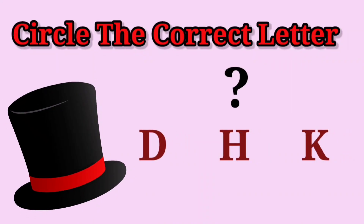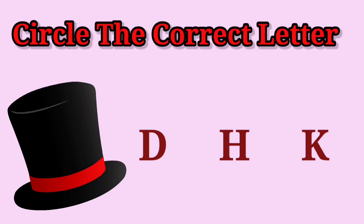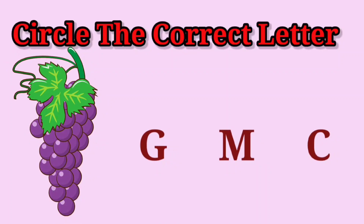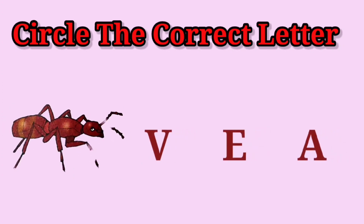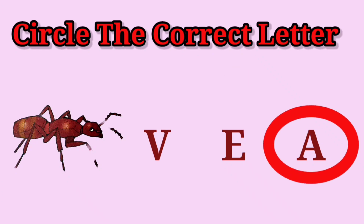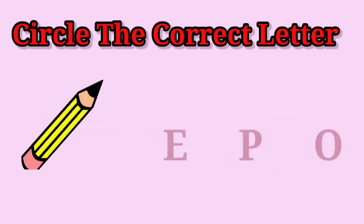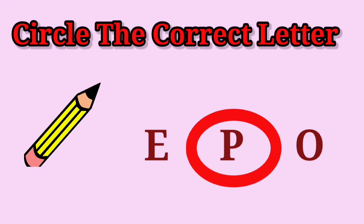Circle the correct letter. H for Hat. G for Grapes. Y for Umbrella. A for Ant. P for Pencil.